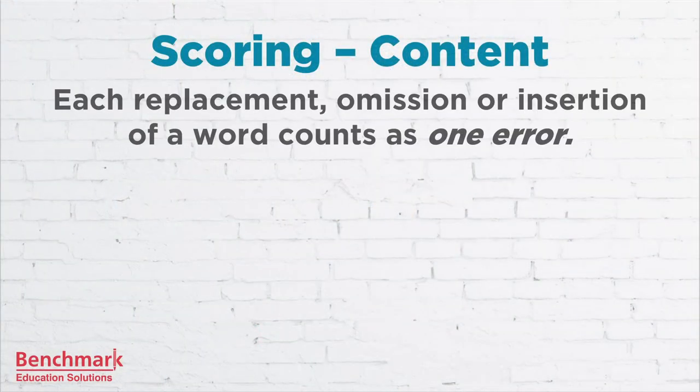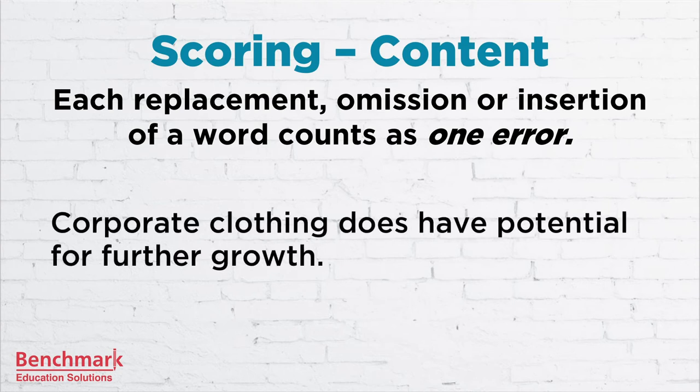We'll show you more tips and tricks in our examples video. Now, criteria three — content — is scored a little differently because it's not based on a scale. Instead, each replacement, omission, or insertion of a word counts as one error. So this basically means that you don't want to change the text as you see it. For example, you wouldn't want to say 'corporate clothing does have the potential for their growth' — adding 'the' and omitting 'for' would count as mistakes.